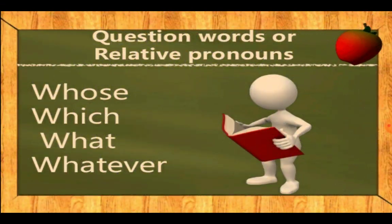Next is question words or relative pronouns. Words like whose, which, what, and whatever are used as relative pronouns. These are the last category of determiners. We use these words to show the relative pronoun of a noun, and they are usually used in question form.